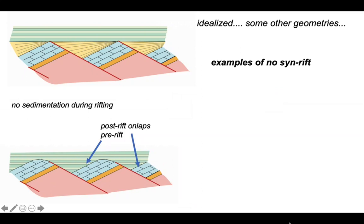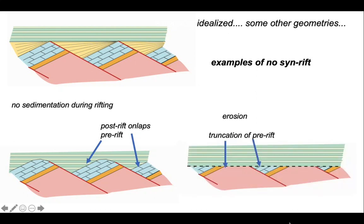Let's also look at what happens if there's no sedimentation at all during rifting. This may occur because there's no sediment flux into this part of the basin or that faulting is so fast that it outpaces any sediment. In this case we've simply got post-rift strata on-lapping directly the pre-rift, and in this situation faulting was accompanied by erosion so we have a truncation or erosional unconformity at the base of the post-rift and the pre-rift, and the faults are simply planed off by that unconformity.